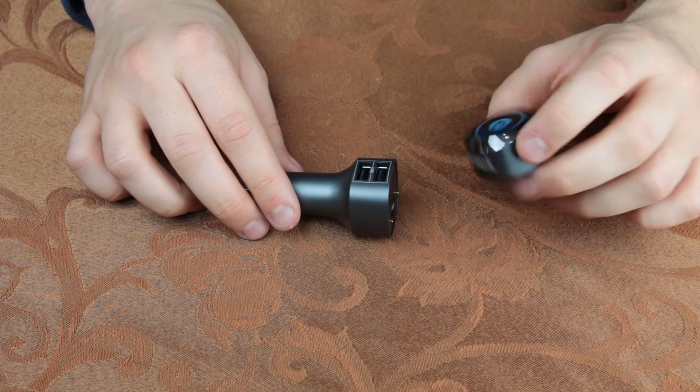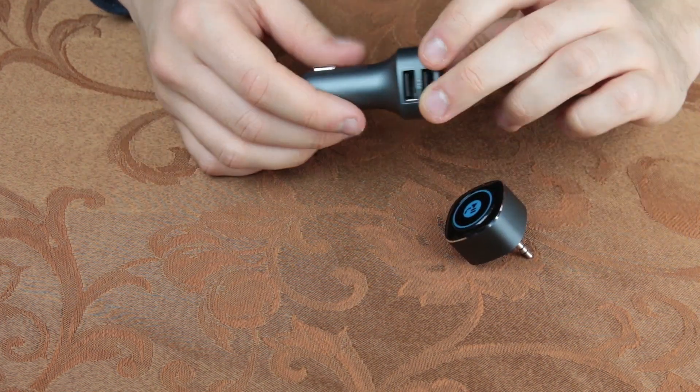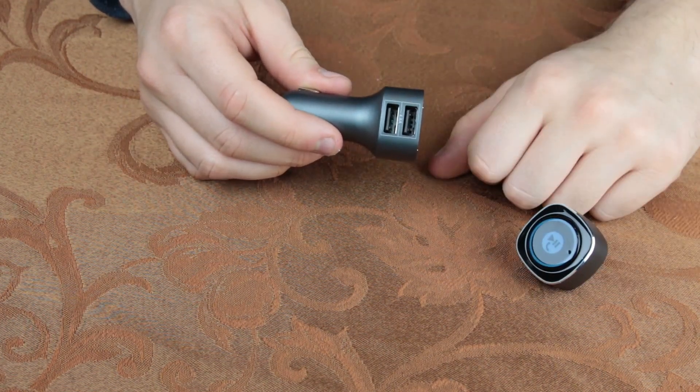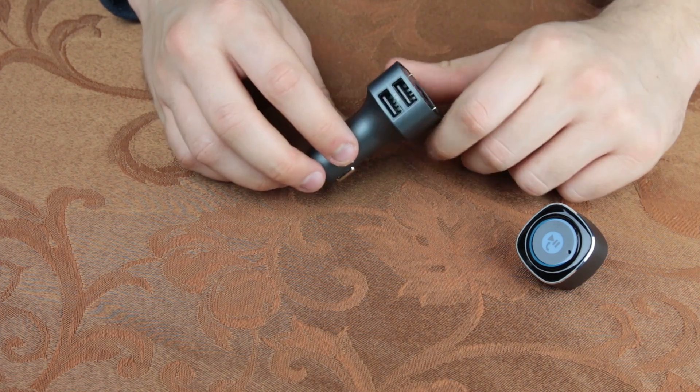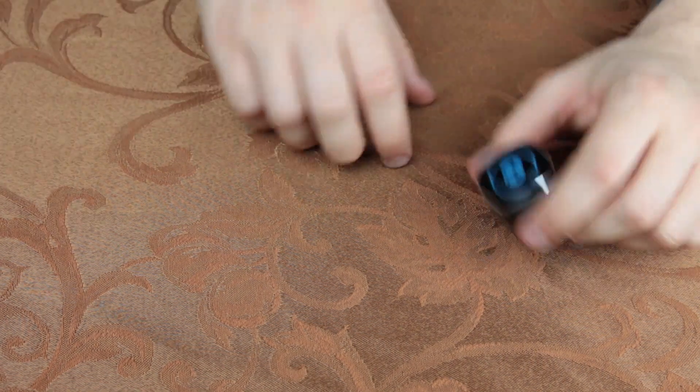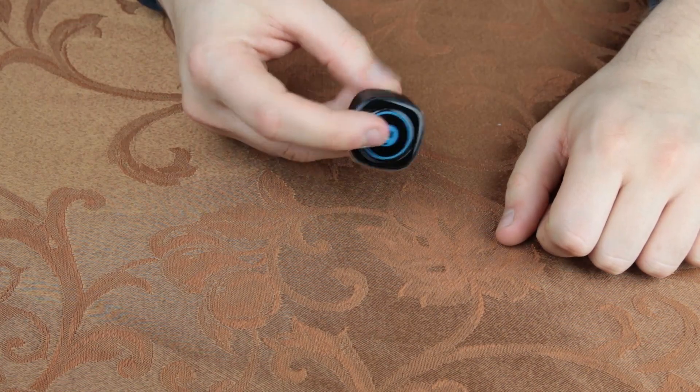So here's how it works. This part plugs into your cigarette lighter, it's got two USB ports, so whatever you're charging in your car you can do that. So that gets plugged in, then this goes directly into your car's auxiliary port.